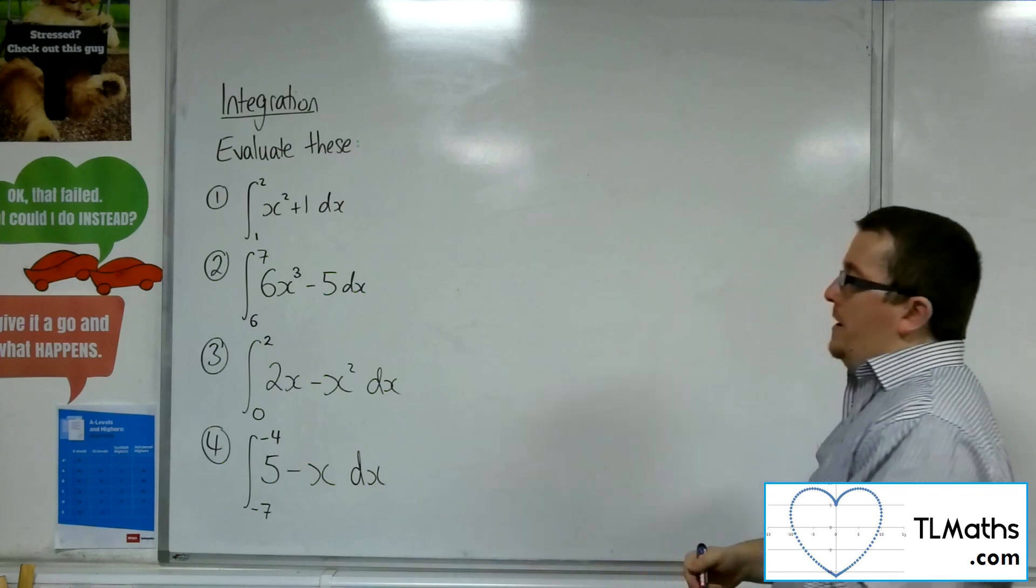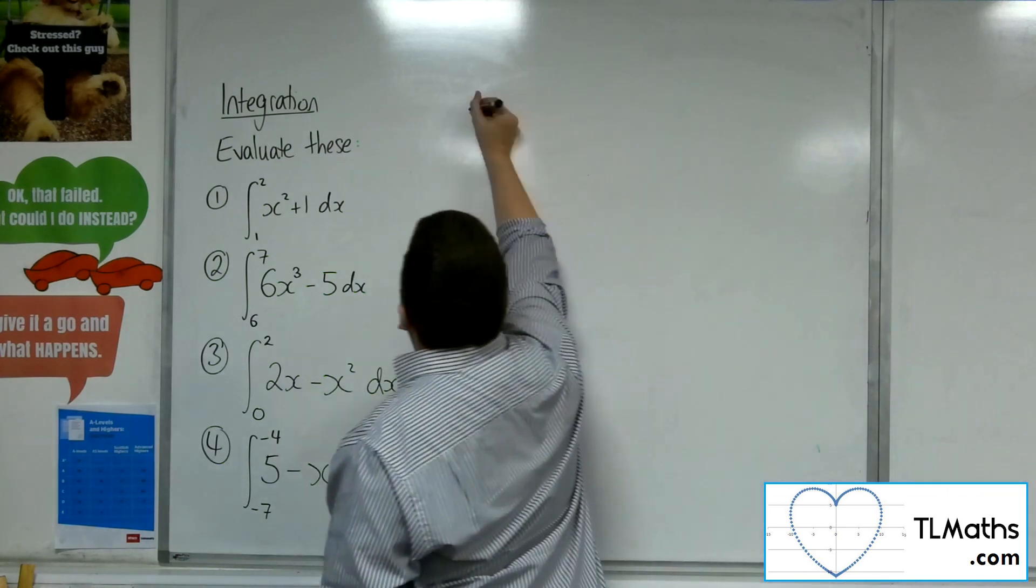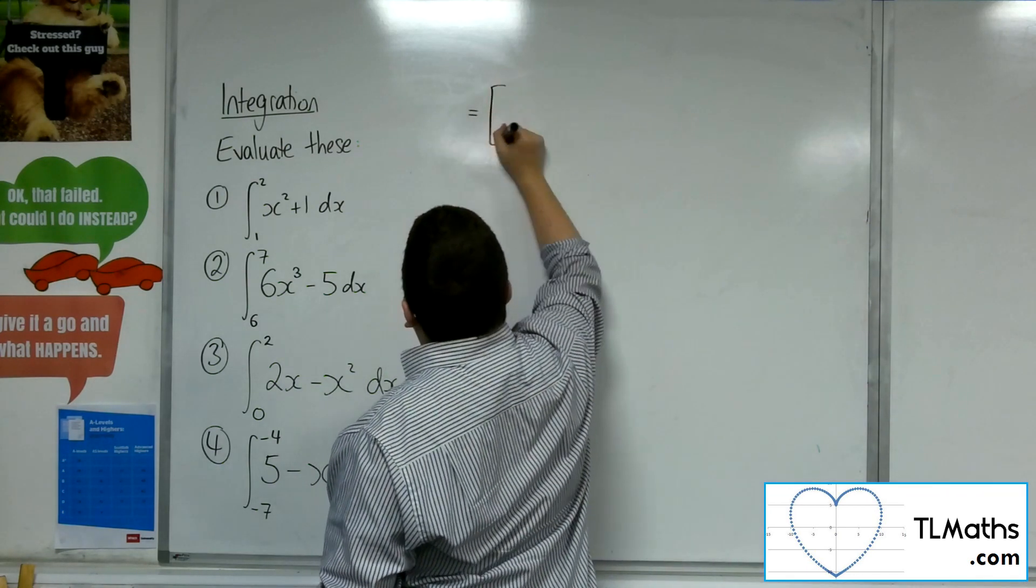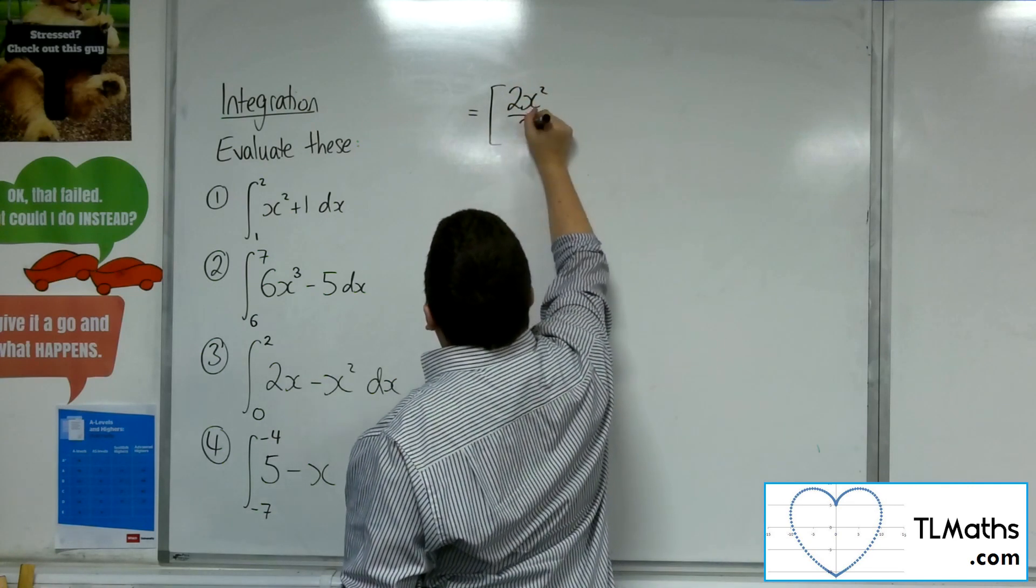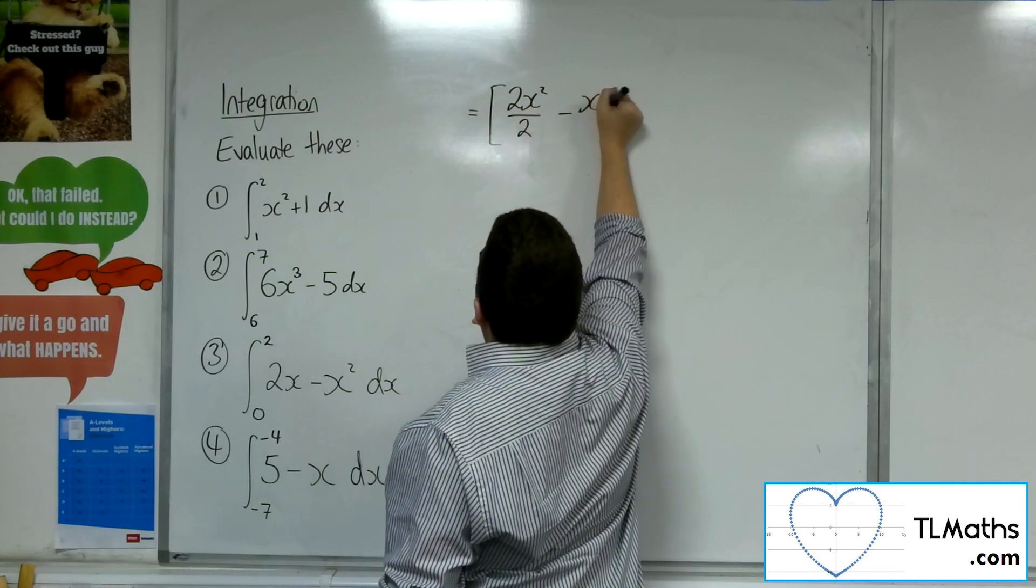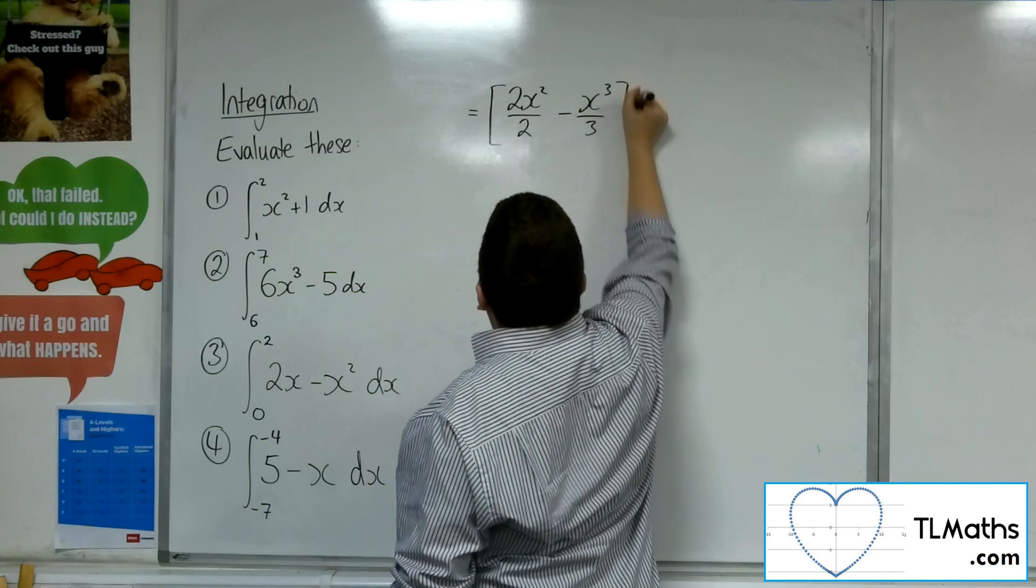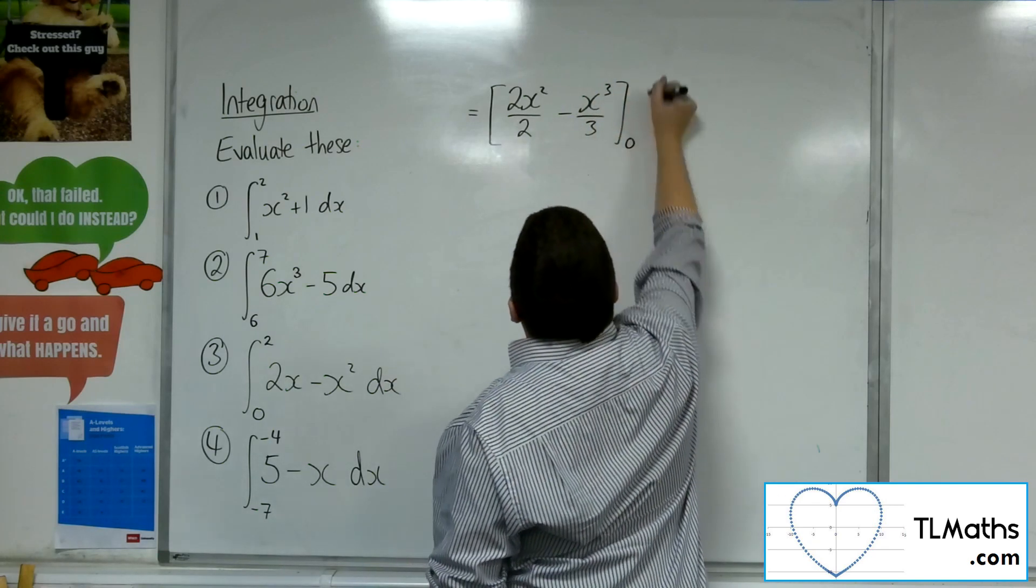Right, let's have a go at number 3. So next line of working. So add 1 to the power, divide by the new power. Take away, add 1 to the power, divide by the new power. Evaluated between 0 and 2.